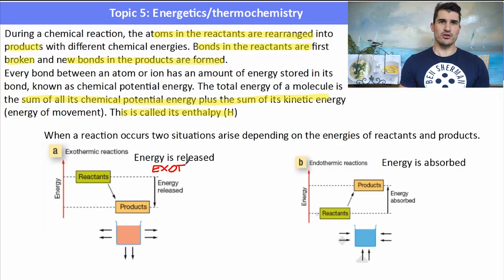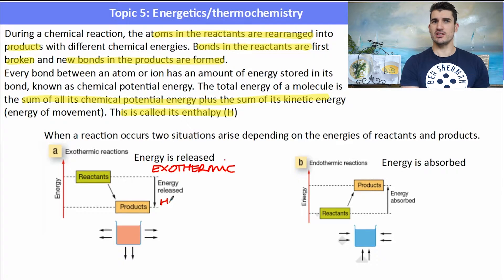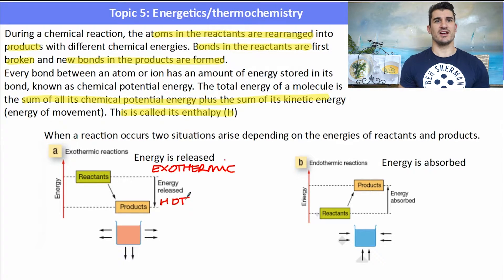Now in exothermic reaction, the reactants have more energy enthalpy than the products. So the reactants have higher amounts of energy, the products lower amounts of energy. So when they react, we release that energy in the form of heat.